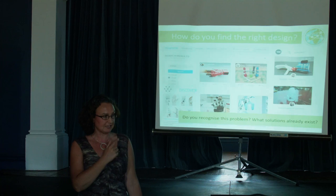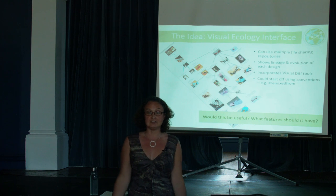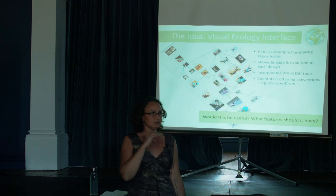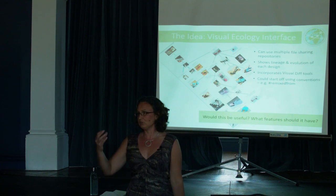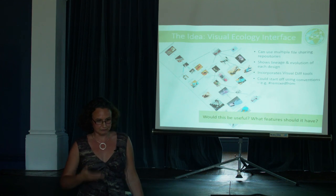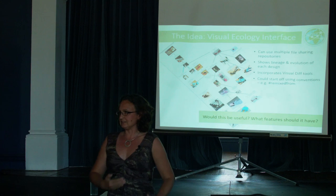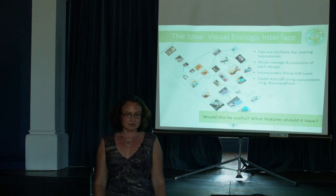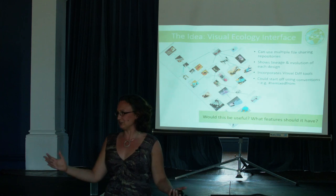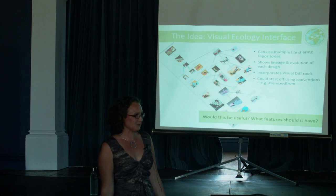The idea Enable have had is what they call a visual ecology interface. In the past they've done this manually — developing a tree that shows what is derived from what in terms of designs, a forking parent-type tree where things can also come back together when mixed. They did this a couple of times a few years ago when the community was smaller and proliferation wasn't as great. But keeping it up manually is no longer practical.